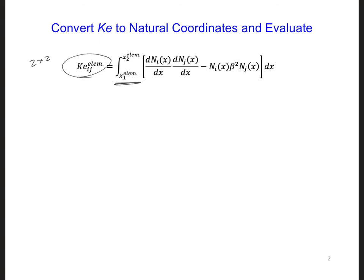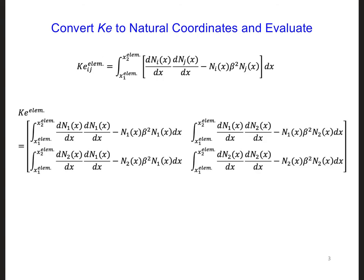To get started, it would help to write out the four Ke terms that we want to transform and evaluate. So to write out the 2 by 2 Ke coefficient matrix here, I just plugged in values for i and j.